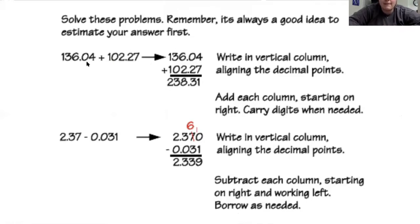In this first example, if they're going this way we want to make sure we stack them. Stack them up, and then once those decimals are stacked you can just add down the columns. Write in vertical column aligning the decimal points, and then add each column starting at the right, carry digits when needed. Just adding like you've always added.